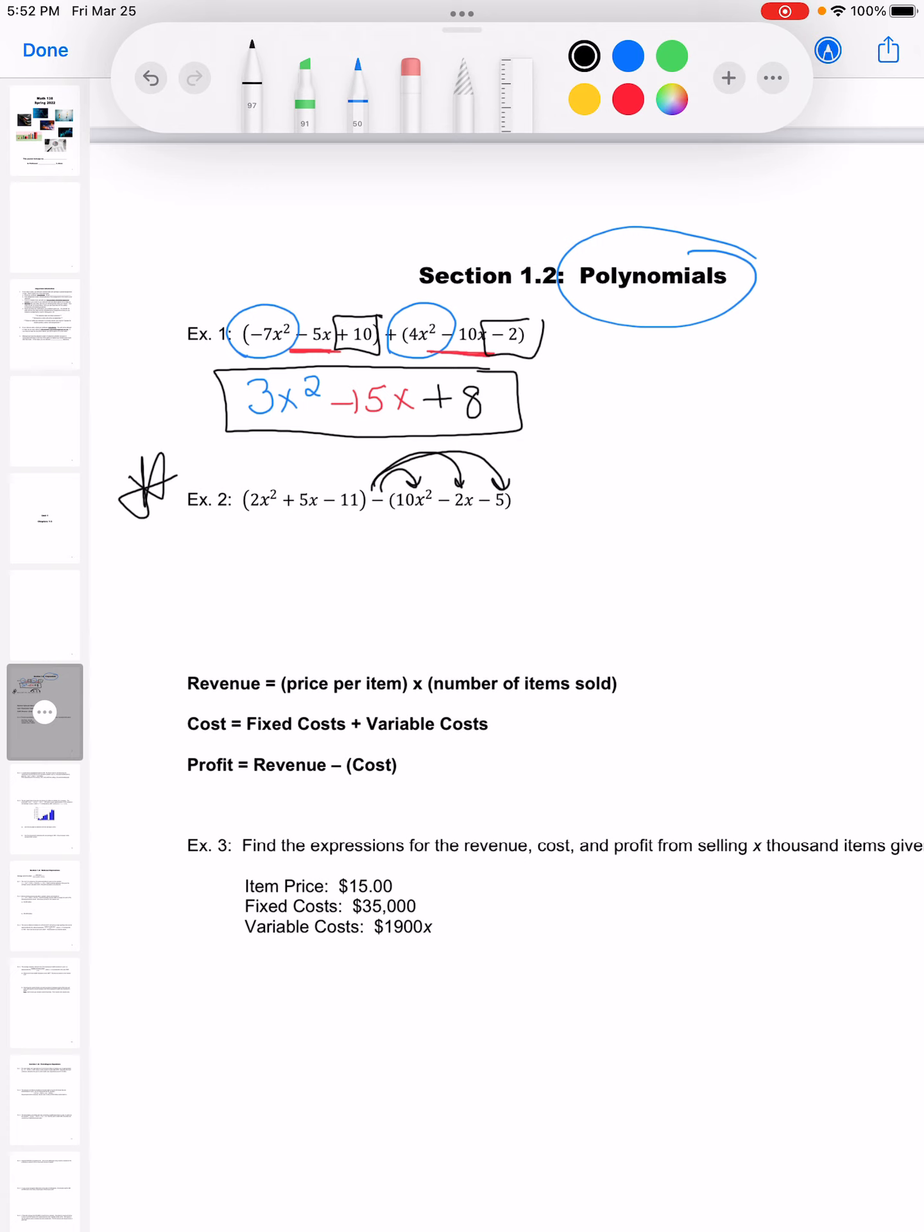So this second set of parentheses would become negative 10x squared plus 2x plus 5. And then I'm not going to change anything to the first set of parentheses.